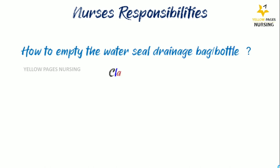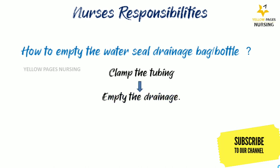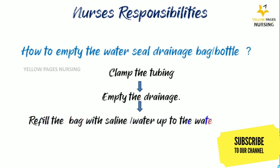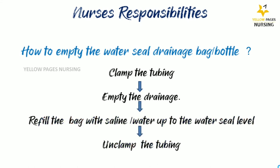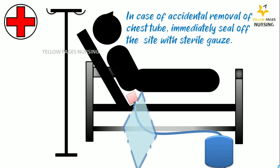To empty the water seal drainage bag or bottle: first clamp the tubing, then empty the drainage, refill the bag with saline or water up to the water seal level, then unclamp the tubing. In case of accidental removal of the chest tube, immediately seal the insertion site with sterile gauze.